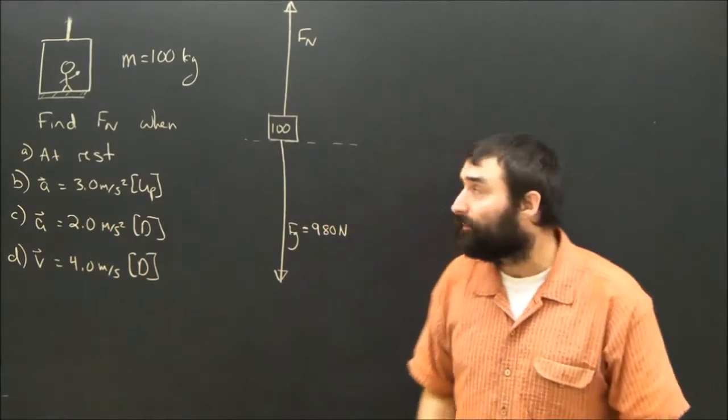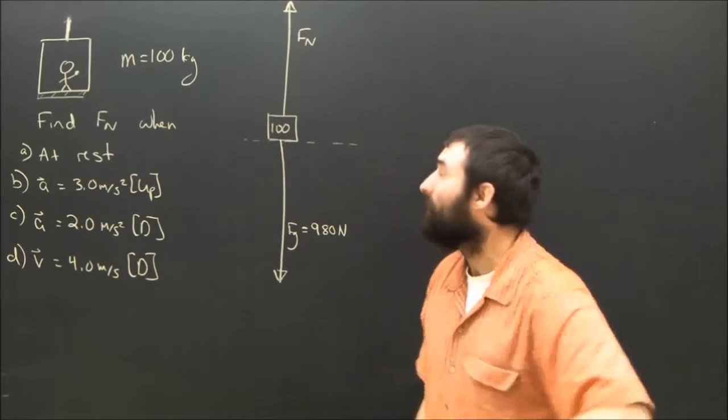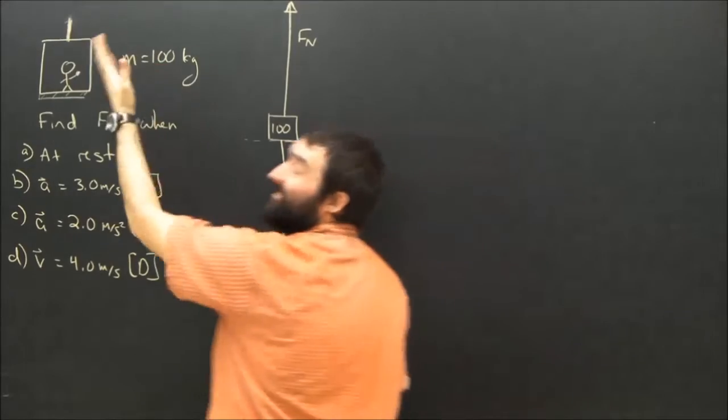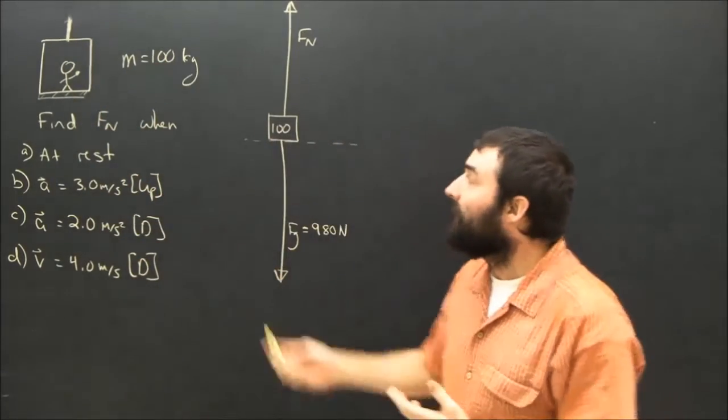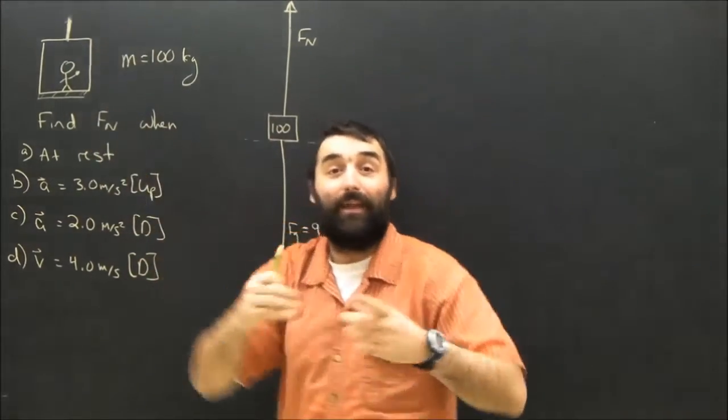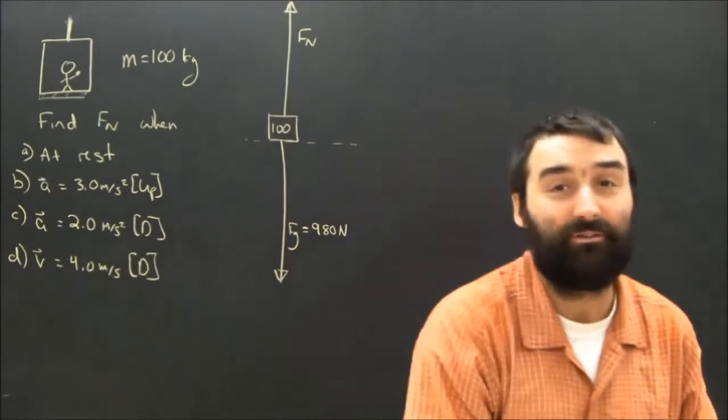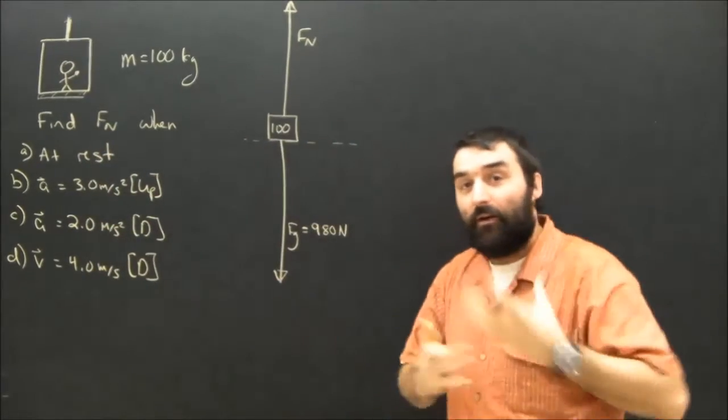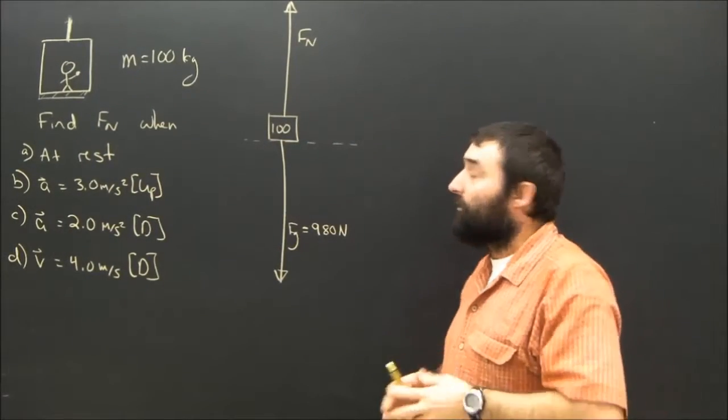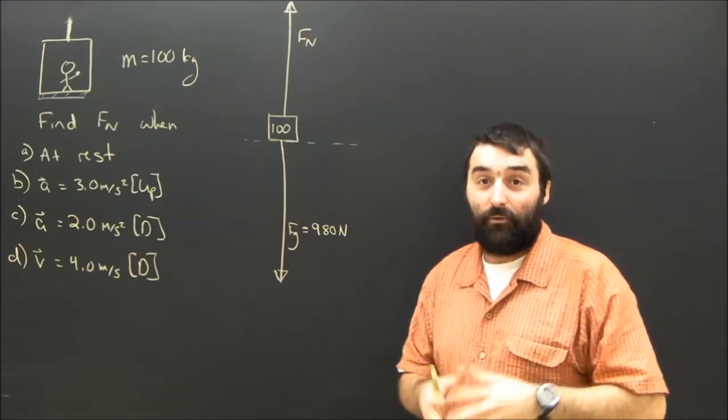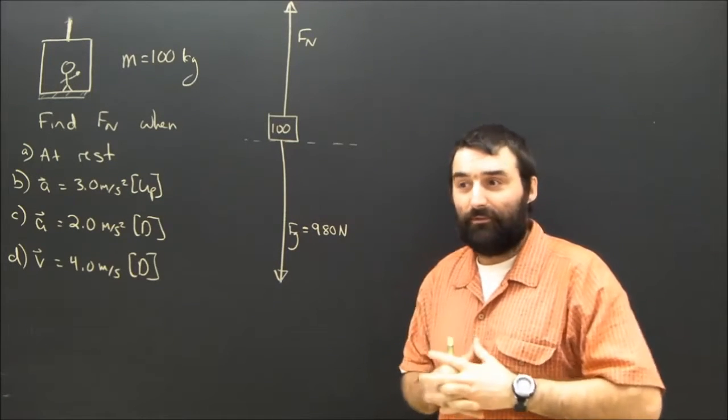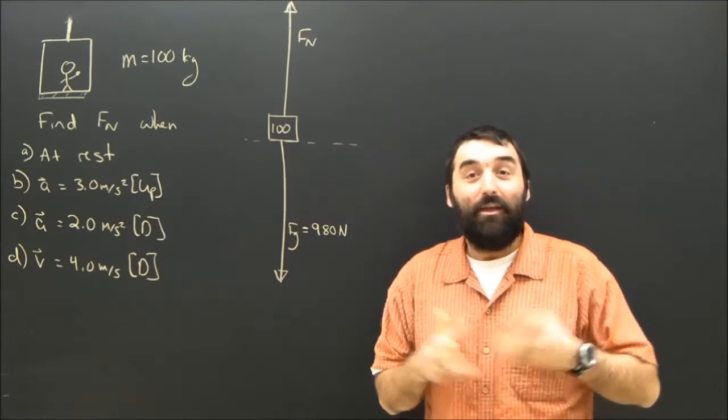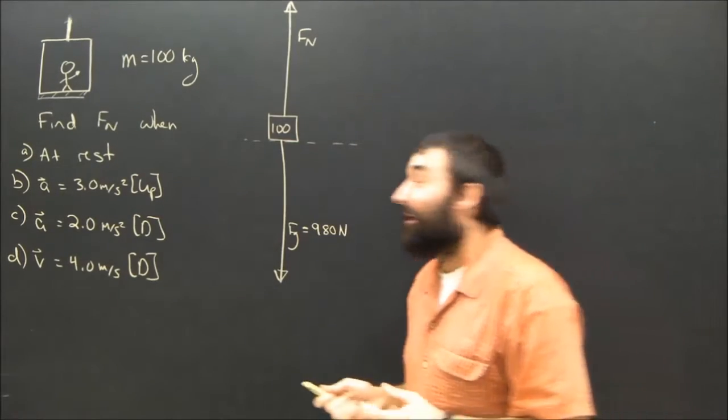Is anyone pushing or pulling on the person? Is there a rope? A lot of people want to put tension, they want to put a rope on this thing. And when I ask them why, they say, well, because the elevator has a cable. And that's true. The elevator does have a cable which is pulling up on the elevator, but we're drawing a free body diagram of the person in the elevator. And unless the person in the elevator is hanging from a rope in the elevator, there's not going to be a tension. So the only two forces are Fn and Fg.